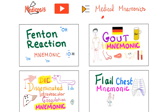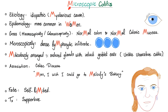This is part of my playlist called Medicosis Medical Mnemonics. So let's do it — the M mnemonic for microscopic colitis. What's the etiology? It's idiopathic — unknown. We are idiots and we cannot figure out the pathology. So microscopic colitis has a mysterious cause.